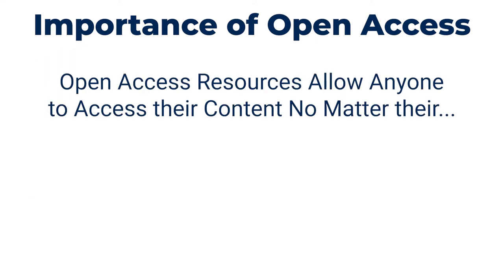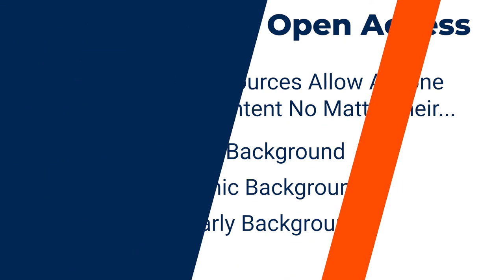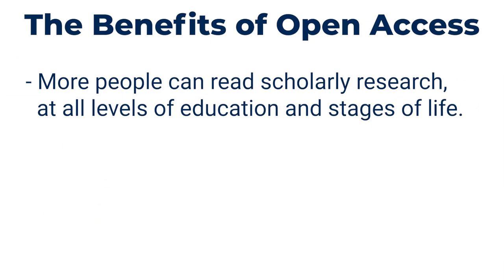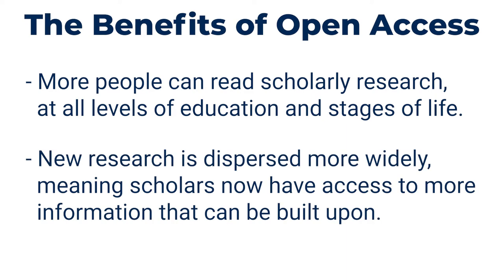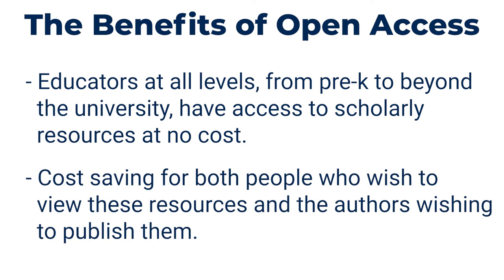With open access resources, anyone could access their content, no matter their social, economic, or scholarly backgrounds. More people can read scholarly research at all levels of education and stages of life. New research is dispersed more widely, meaning scholars now have access to more information that can be built upon. Educators at all levels, from pre-K to beyond the university, have access to scholarly resources at no cost. It's also cost-saving for both people who wish to view these resources and the authors wishing to publish them.